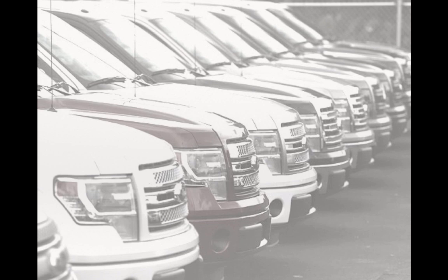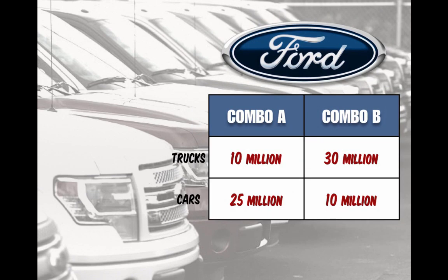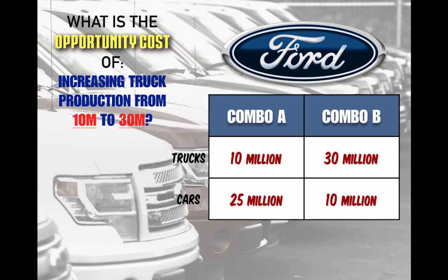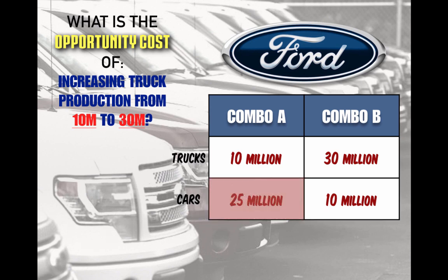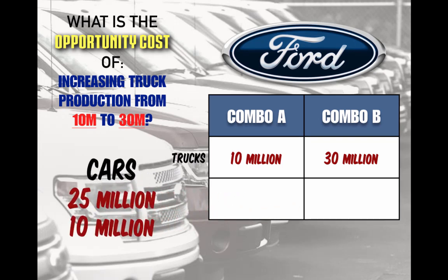Firms must analyze opportunity costs when making decisions about production. With its given resources, Ford can produce two combinations. Combination A has Ford producing 10 million trucks and 25 million cars. Combination B has Ford producing 30 million trucks and only 10 million cars. To increase truck production from 10 million to 30 million, Ford would move from Combination A to Combination B, meaning fewer resources for cars. The opportunity cost is 15 million cars.